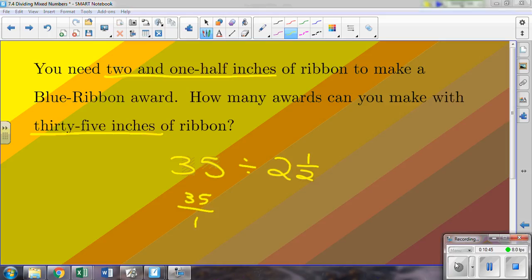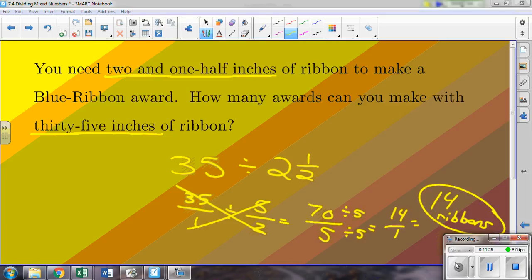This is 35 over 1. And we've seen this one a couple times, that's 5 over 2. So 35 times 2 gives me 70, 1 times 5 is 5. And so we have our answer, 70 divided by 5. And if we just divide this step out, that's going to give us 14 over 1, which of course is just 14. So with 35 inches of ribbon, we're able to make 14 of the ribbon awards.